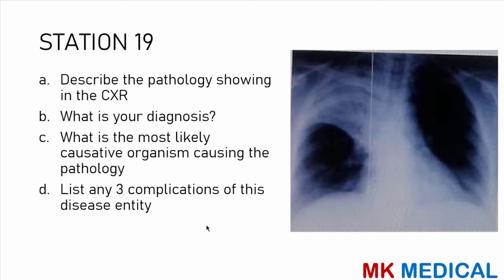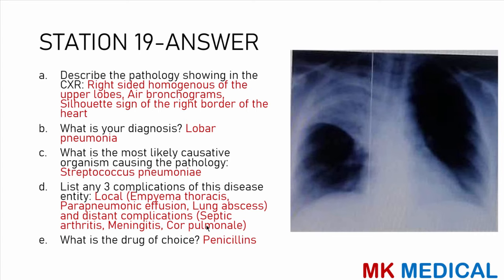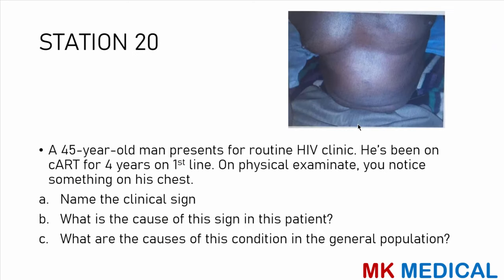Station 19: describe the pathology on the chest X-ray. There is a right-sided homogeneous opacity of the upper lobe with air bronchograms visible within the opacity, limited by the fissure, and a silhouette sign affecting the right heart border. The diagnosis is lobar pneumonia, most likely caused by Streptococcus pneumoniae. Local complications include pyothorax, parapneumonic effusions, and lung abscesses. Distant complications include septic arthritis, meningitis, and cor pulmonale (right-sided heart failure due to pulmonary pathology). Drug of choice: penicillins, or third-generation cephalosporins.